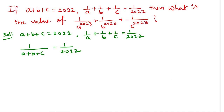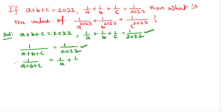Now observe: on the right side we have 1/2022, and from the second given condition we also have 1/2022. So we can write 1/(A plus B plus C) equals 1/A plus 1/B plus 1/C.